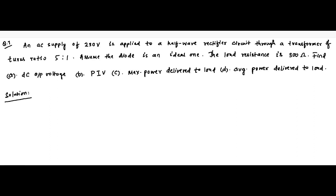Here is another question on half wave rectifier. An AC supply of 230 volts is applied to a half wave rectifier circuit through a transformer of turns ratio 5 is to 1. Assume the diode is an ideal one. The load resistance is 300 ohm. Find the DC output voltage, the peak inverse voltage PIV, maximum power delivered to the load, and average power delivered to the load.